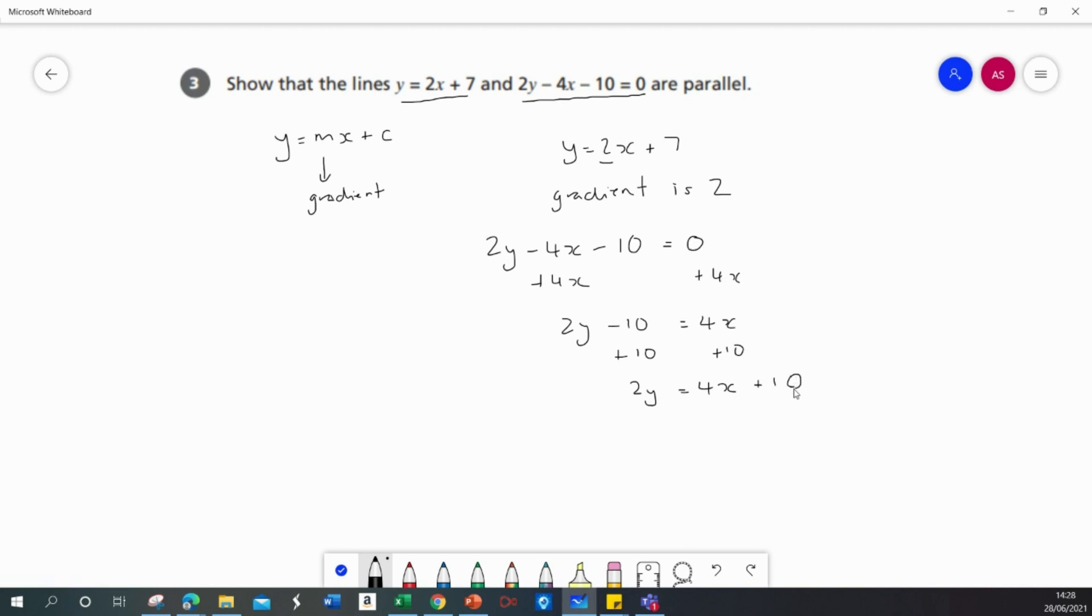And then lastly divide both sides by 2 to make y the subject, to give y equals 2x plus 5. Now this is in form y equals mx plus c, and I can see that the gradient of that line is also 2.